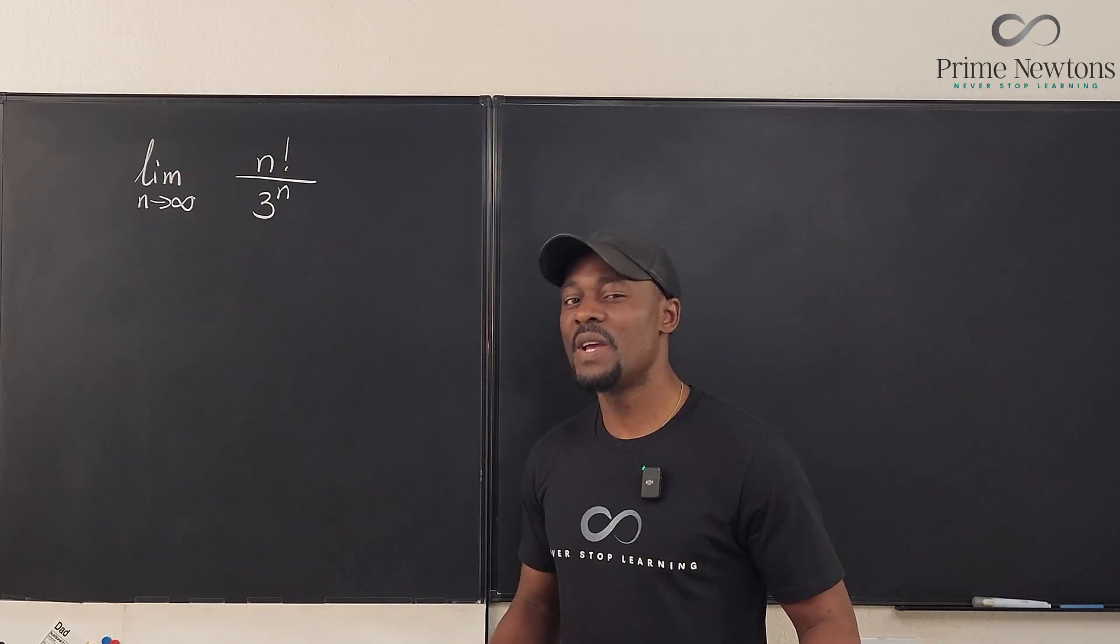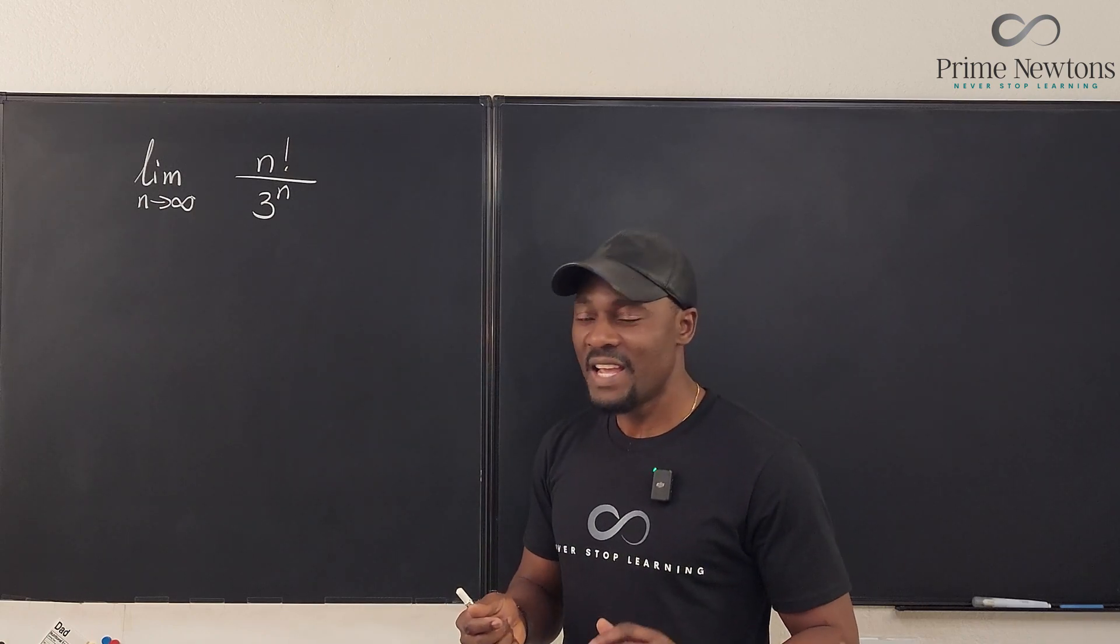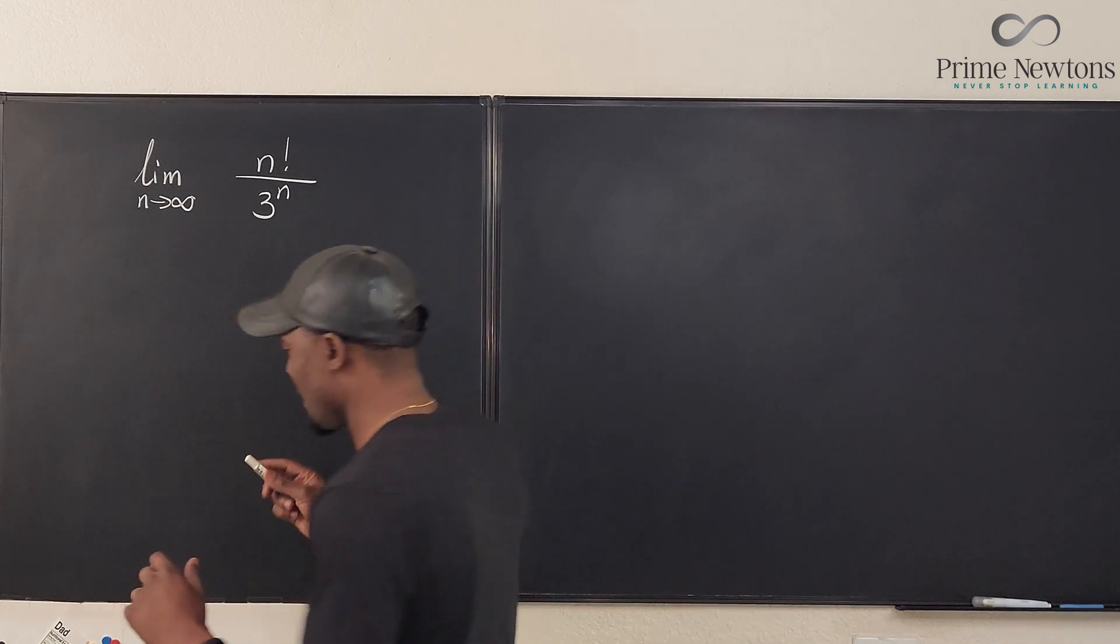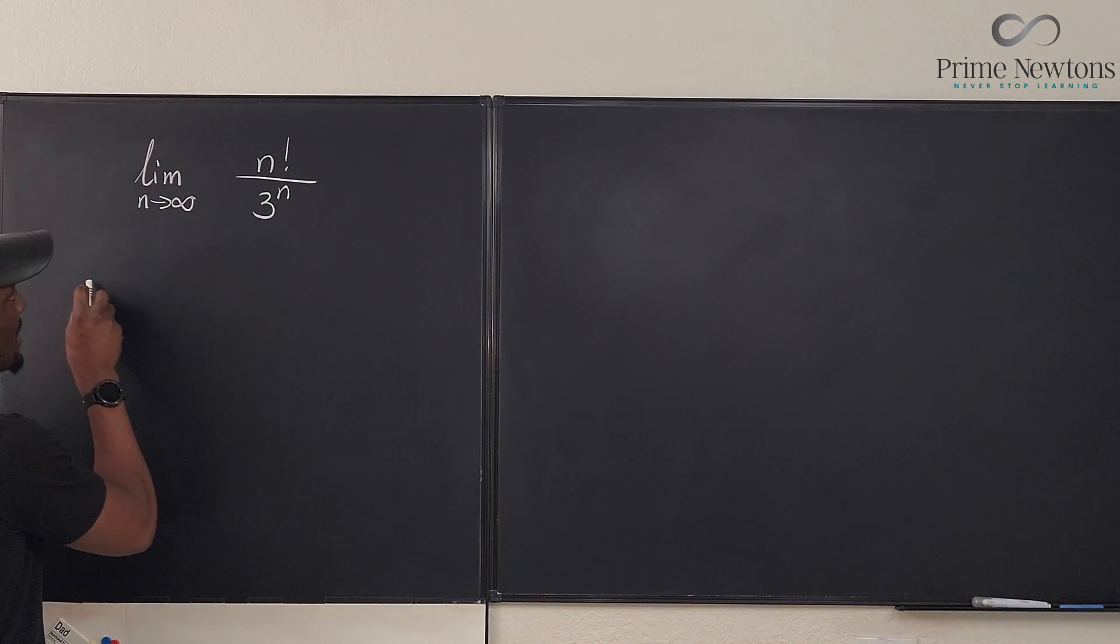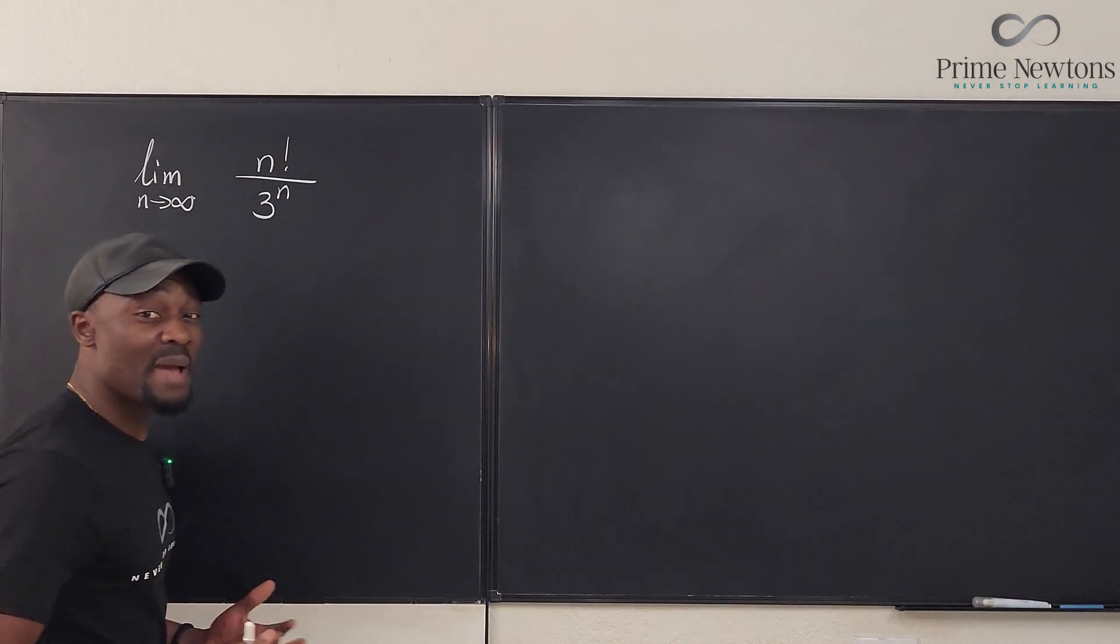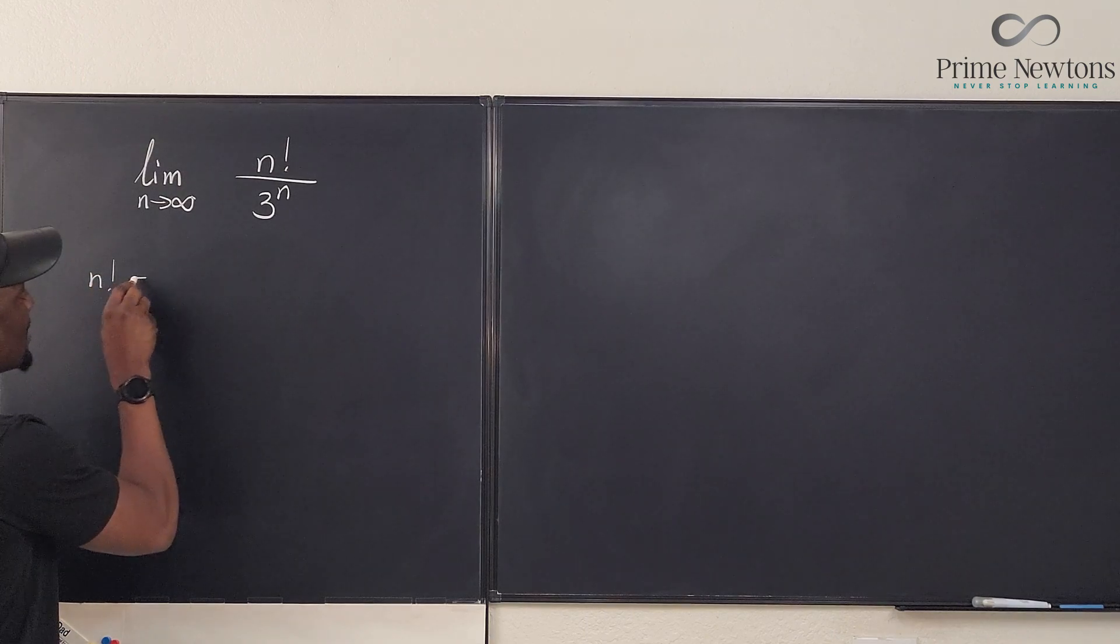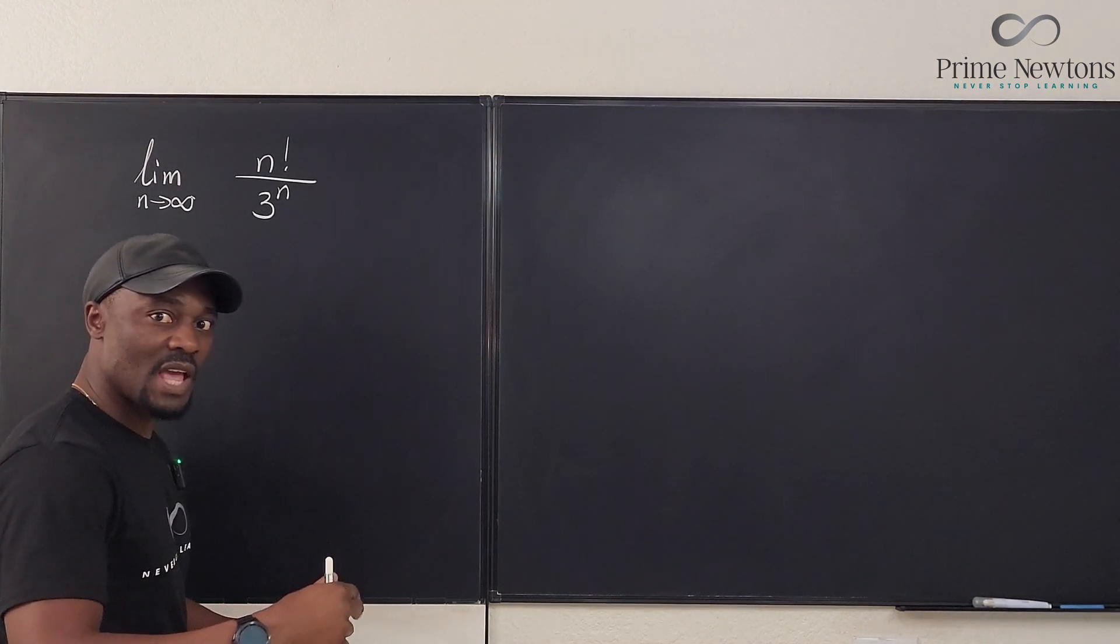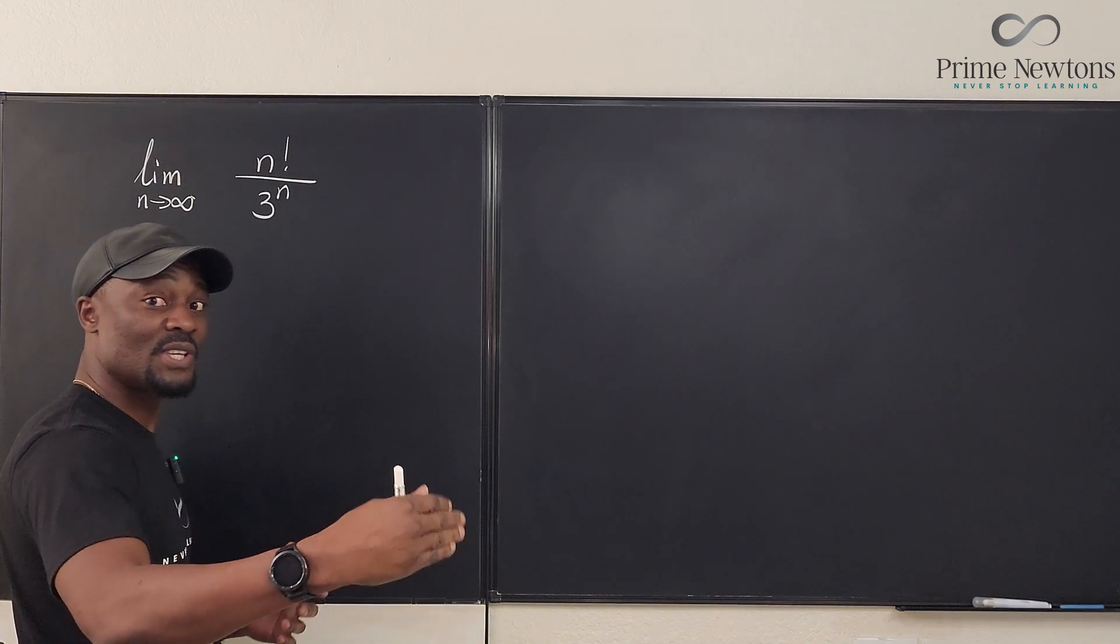The first thing you have to do is be able to break down whatever you have here. Remember that n factorial, this is because we have to make some comparison. n factorial is the same thing as n times n minus 1 times n minus 2 times n minus 3 until you get to 1.